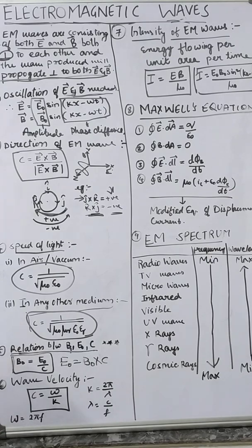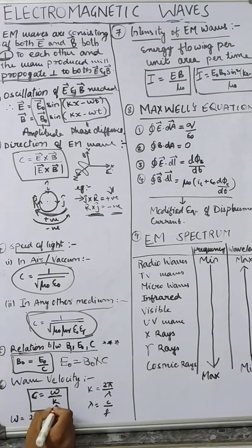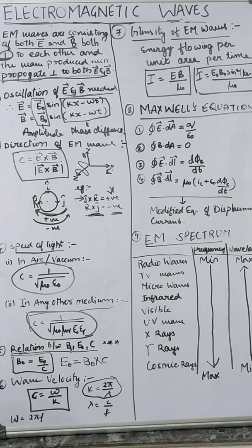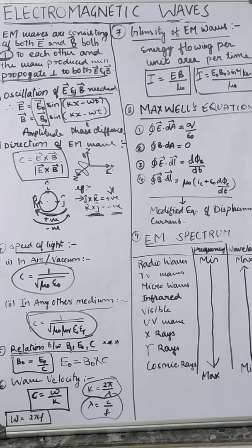Next, wave velocity — the velocity of the wave. Speed of light equals ω / k, where ω is our angular frequency and k is our wave number. k = 2π / λ, where λ is our wavelength equal to c / f. And ω = 2πf, where f is the frequency.